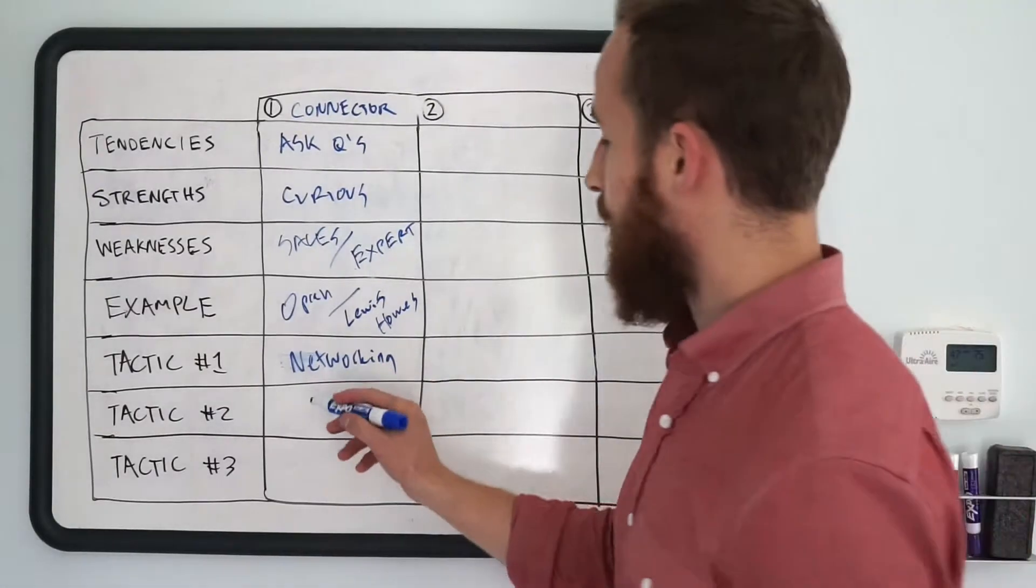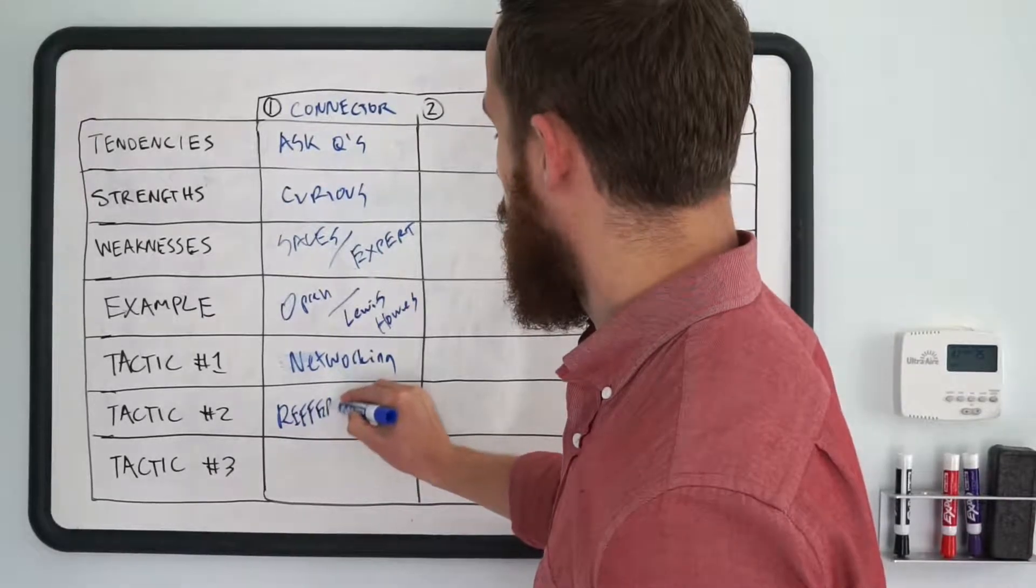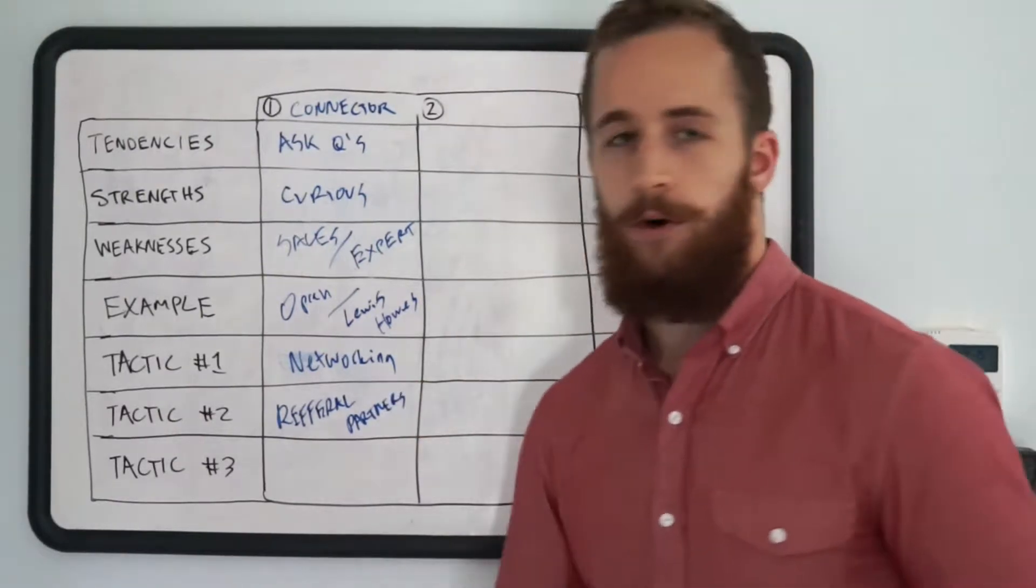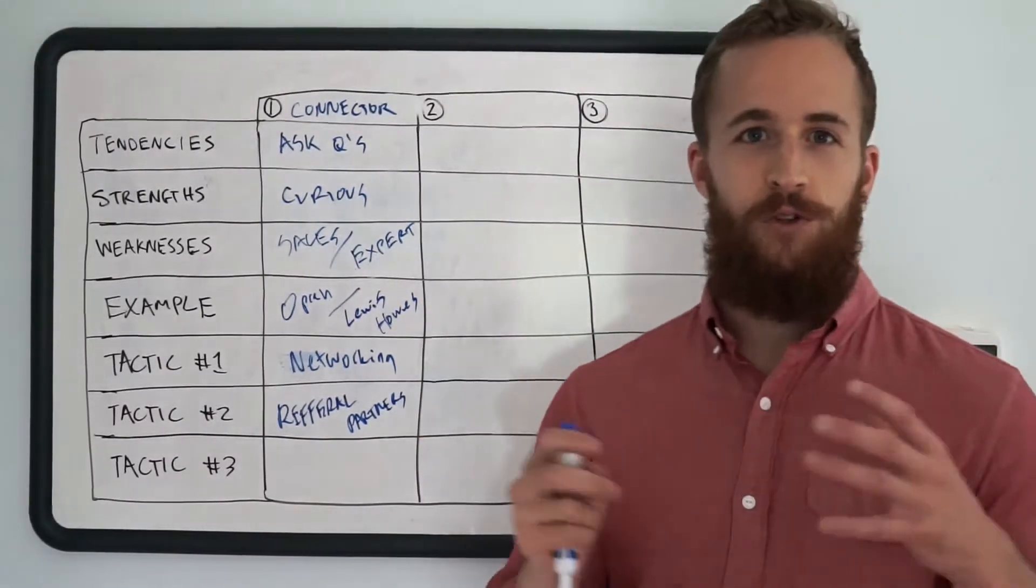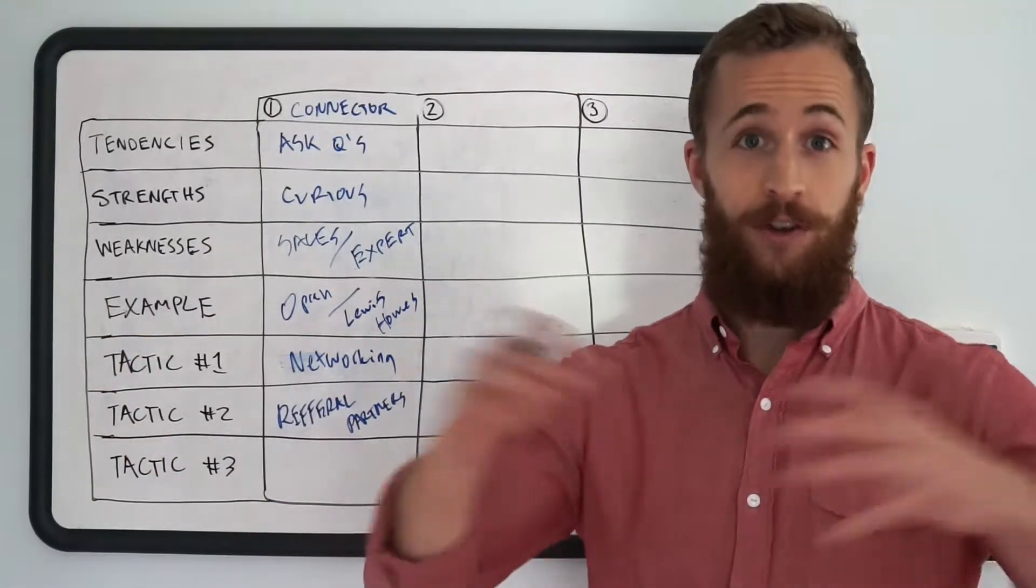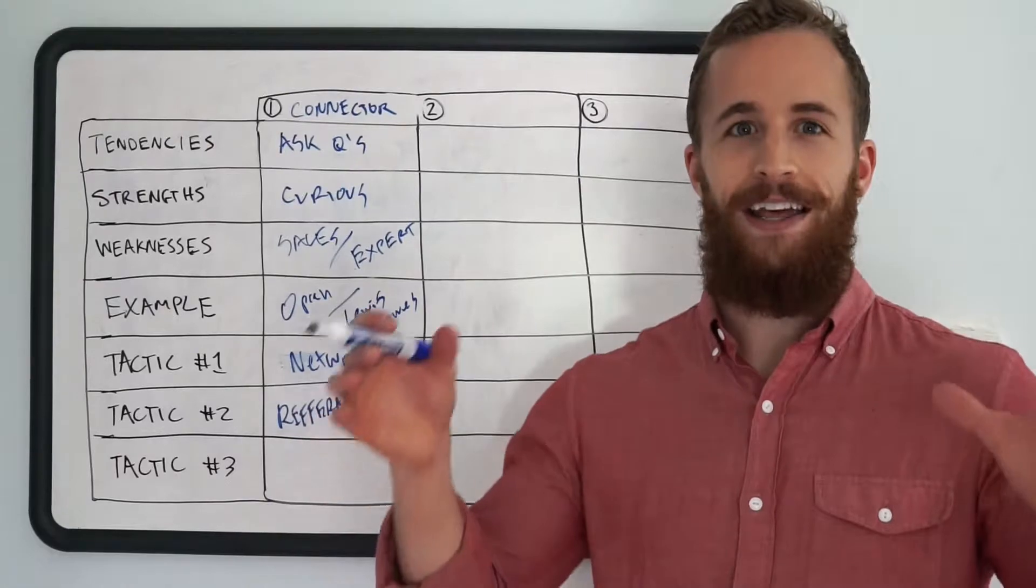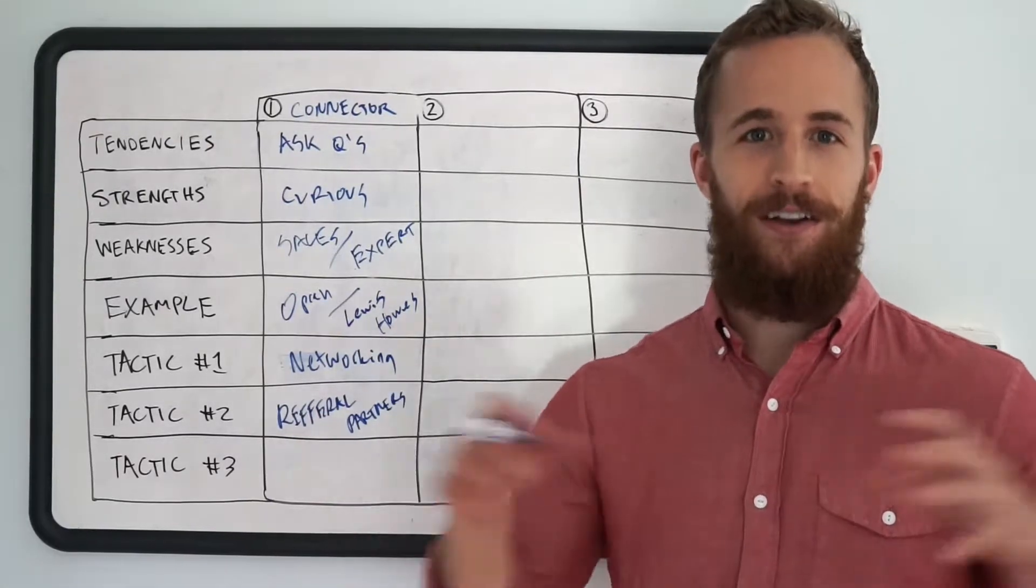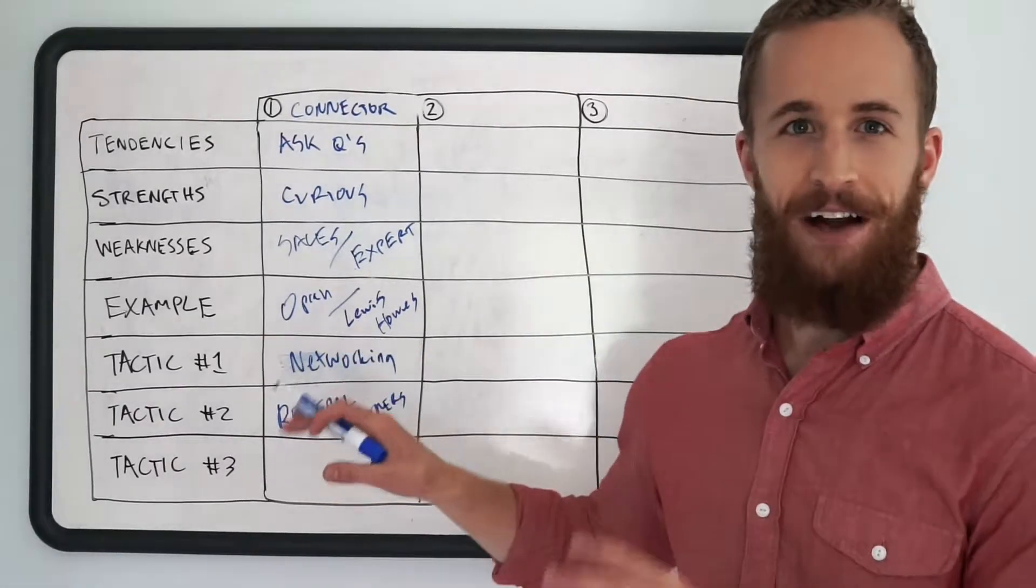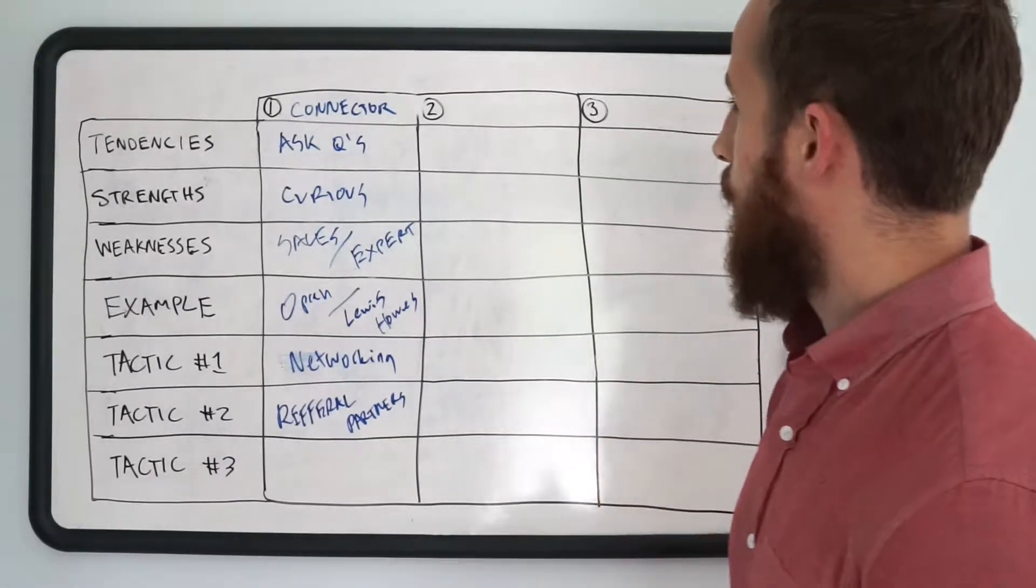Which takes us to our second tactic, which is referral partners. So referral partners. This can be joint venture partners. It can just be a casual relationship where you refer people to a service provider who helps your similar market, but in a complementary way. Those are typically the best service providers. Who already has an audience of your people, already serves your people, but they're not a direct competitor. Okay, so connecting with referral partners, adding value to them, becoming friends with them, making them love you and want to recommend you to others.